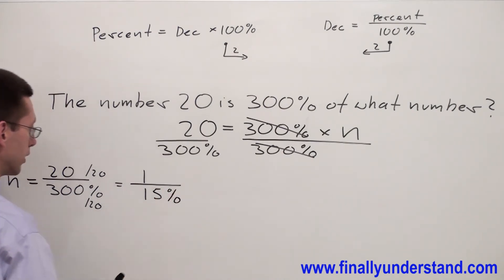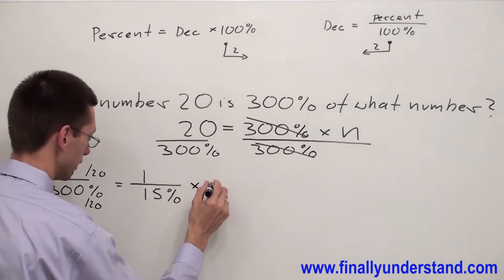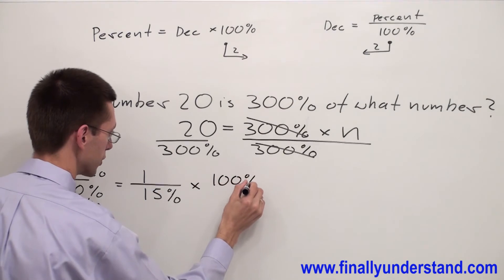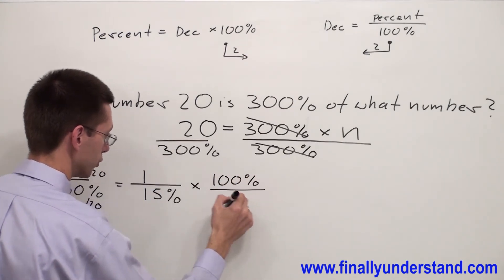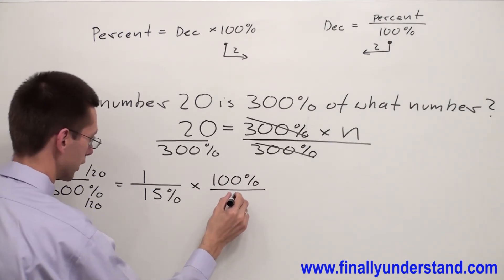Now remember, we don't like percents in the denominator. In order to eliminate the percent from the denominator, we have to multiply the whole fraction by 100%, converting 100% to an improper fraction.